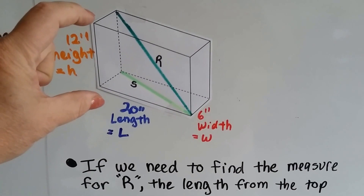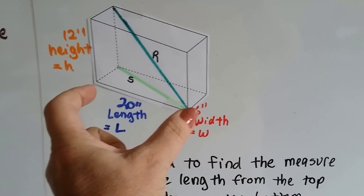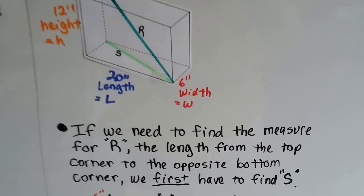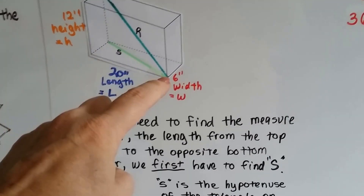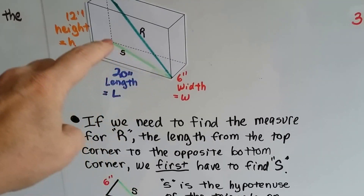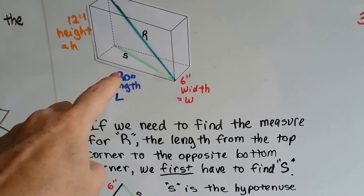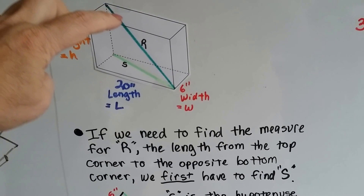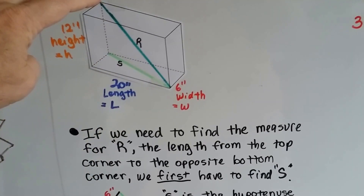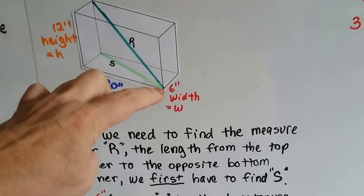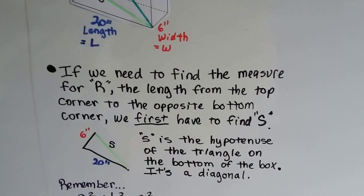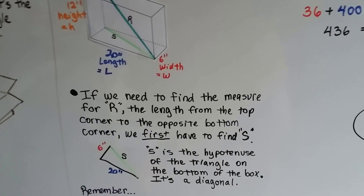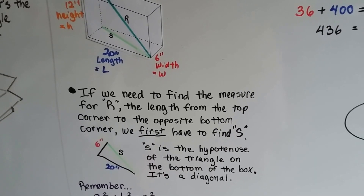We've got a box that's 12 inches high, 20 inches long, and 6 inches wide. We've got a diagonal down here called S, cutting the bottom of the box into two triangles. Then there's line R going from this back upper corner to the front lower corner. We need to find the measure of R — the length from the top corner to the opposite bottom corner.